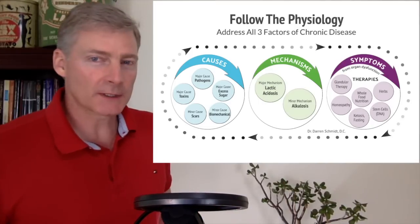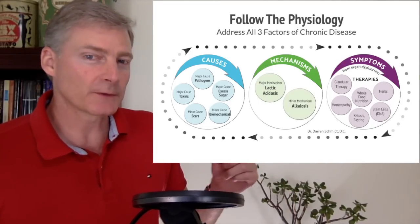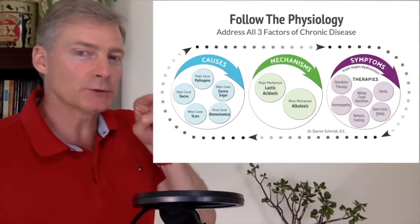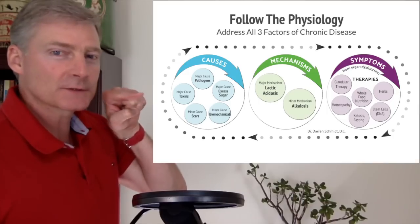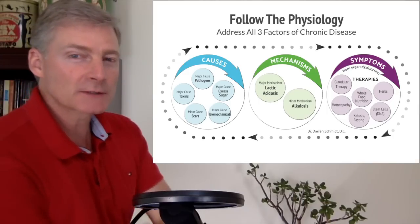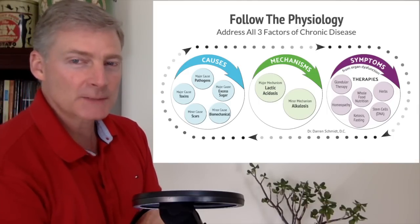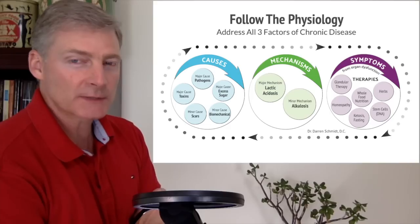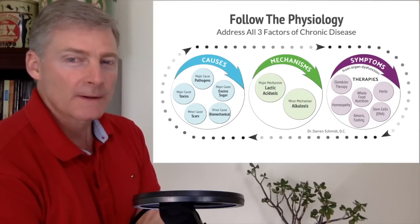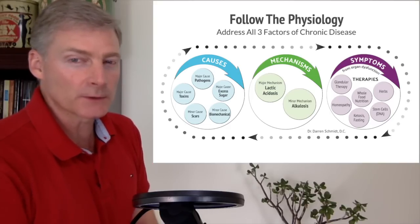And this is what it looks like. You may have seen it before, but I want to focus on this blue circle, this very first circle right here. Three major causes of chronic illness: toxins, pathogens, and excess sugar metabolism. There's also two minor causes, but we're going to ignore those for now.